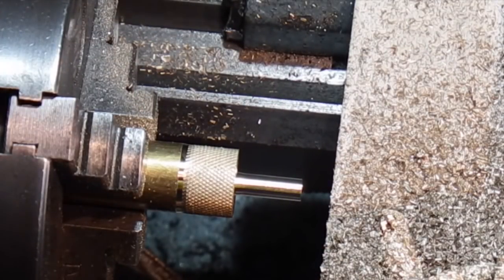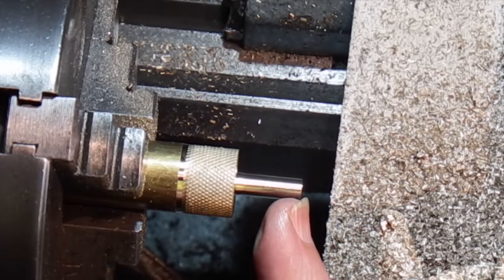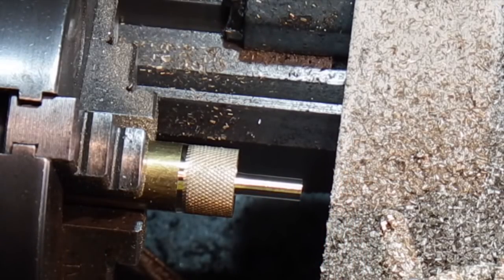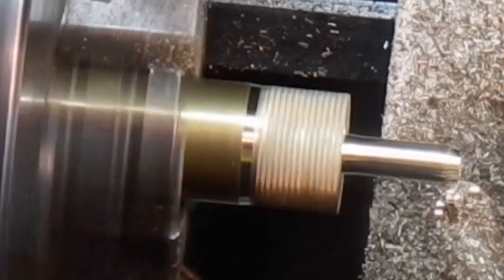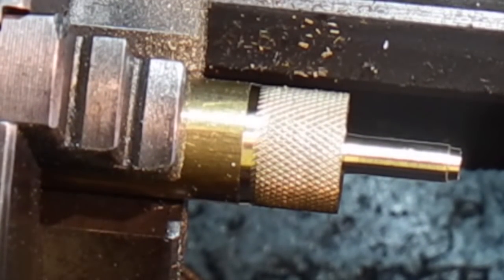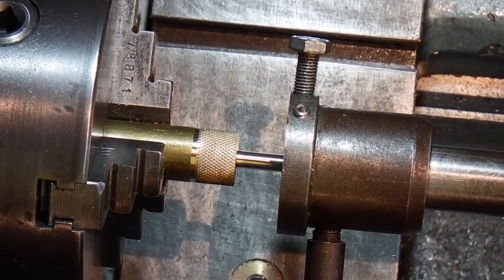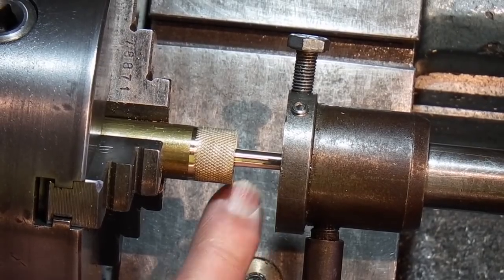Now I need to make the end bit clear of the threads so that if it does peen over in use it's not going to lock up on the threads. So I'll take another half a mil off which is a mil on the diameter. That's ready for the threading. So I've fitted my die holder in the lathe, 5mm die in there.